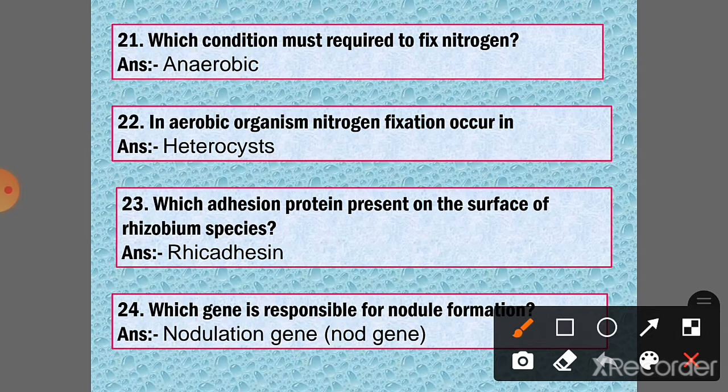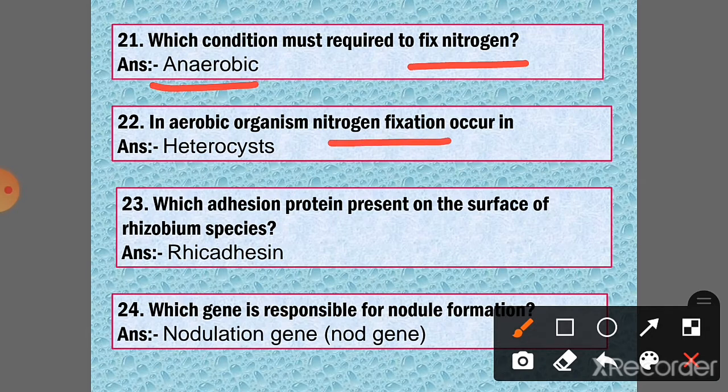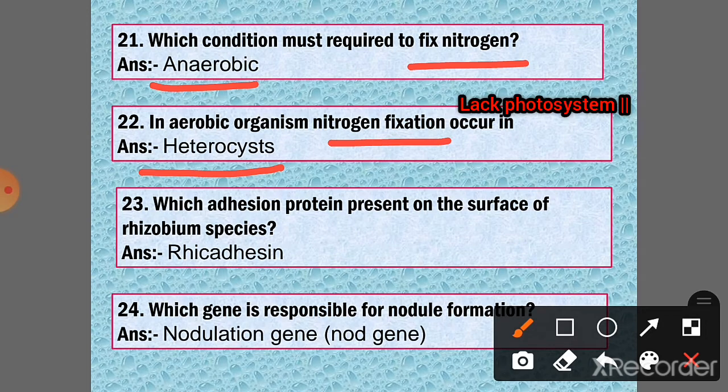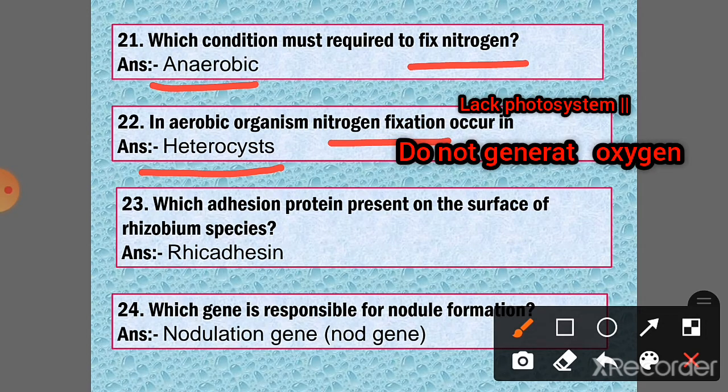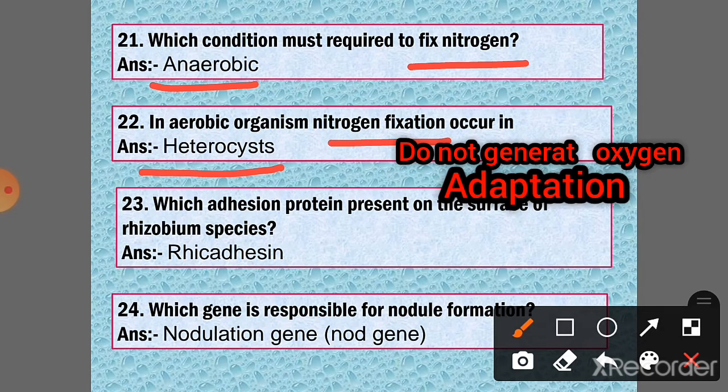Question 21: Which condition must be required to fix nitrogen? Answer: Anaerobic. Question 22: In aerobic organisms, nitrogen fixation occurs in heterocysts. Heterocysts are specialized cells in which photosystem one does not generate oxygen. It is the adaptation for aerobic organisms for nitrogen fixation.